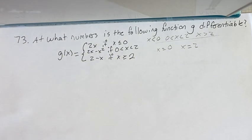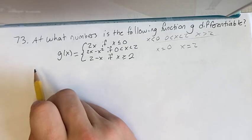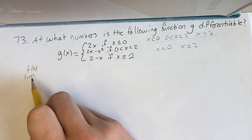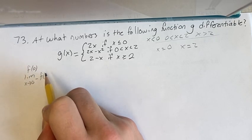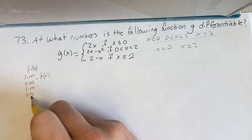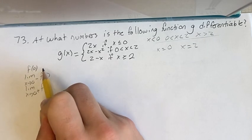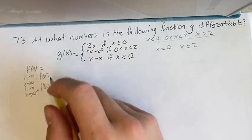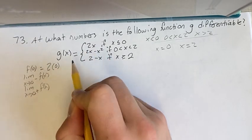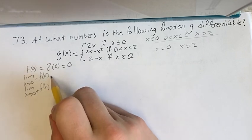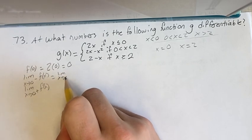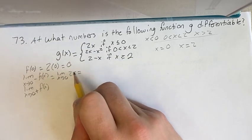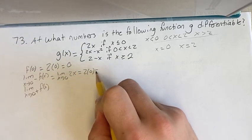So first we have to find whether it's continuous or not. So for x equals 0, we have to see f of 0, the limit as x approaches 0 from the left of f, and limit as x approaches 0 from the right of f. f of 0 is going to be, since we have less than or equal there, 2x, so 2 times 0, which is 0. This is the limit as x goes to 0 of, when you're going from the left, so less than 0 would be 2x. We can plug in 0, so we get 2 times 0 equals 0.